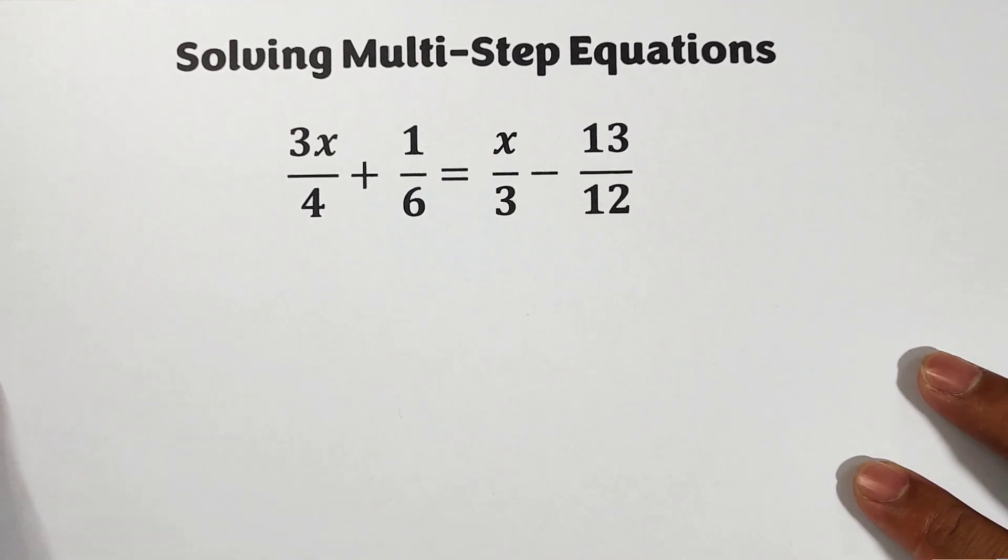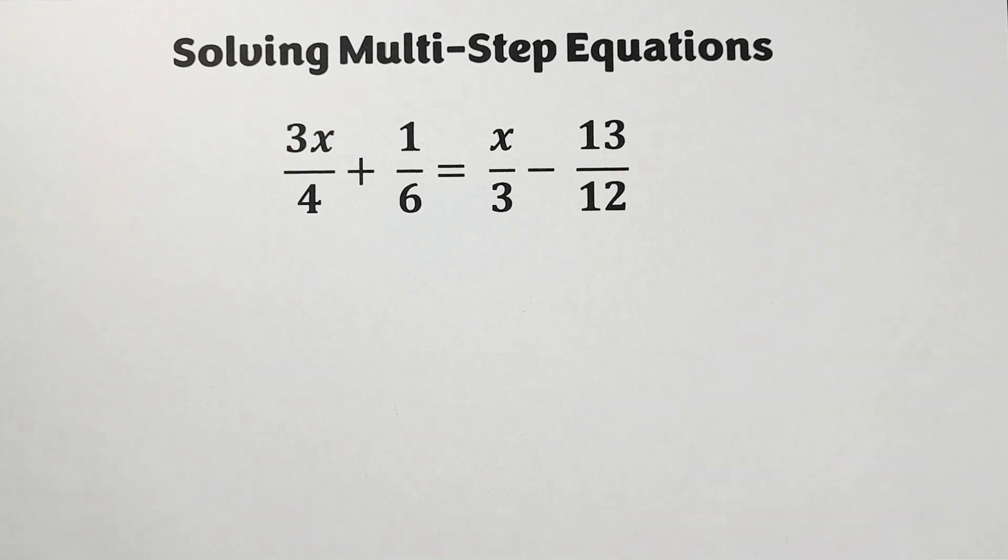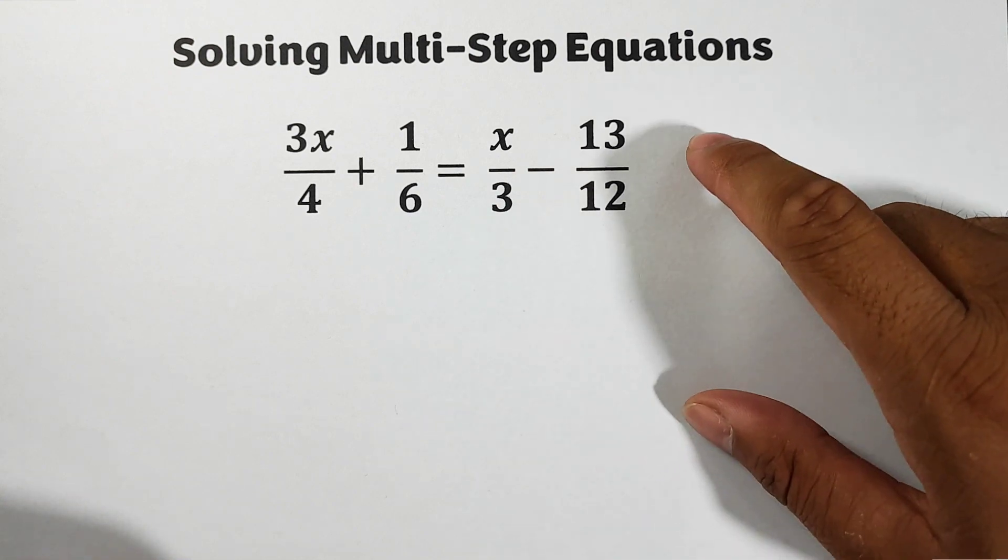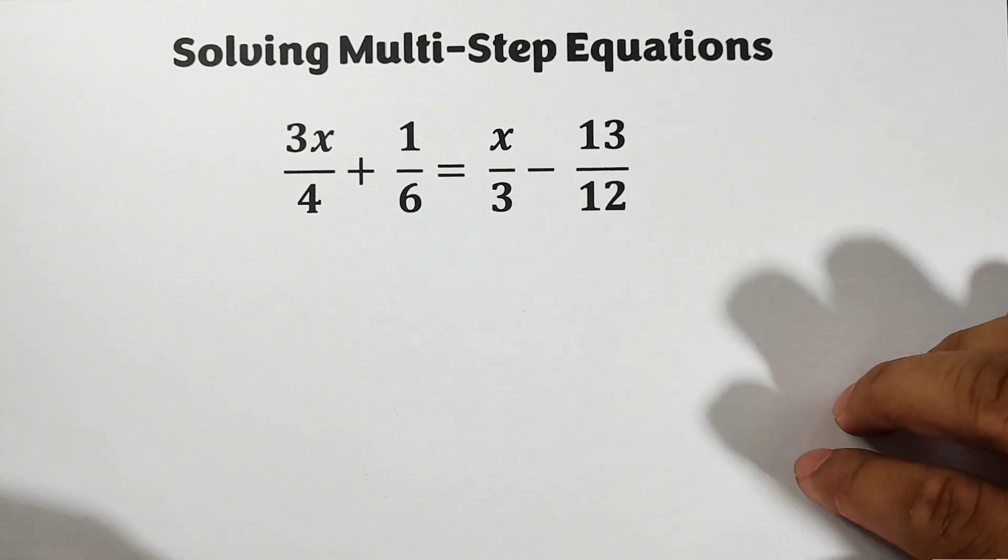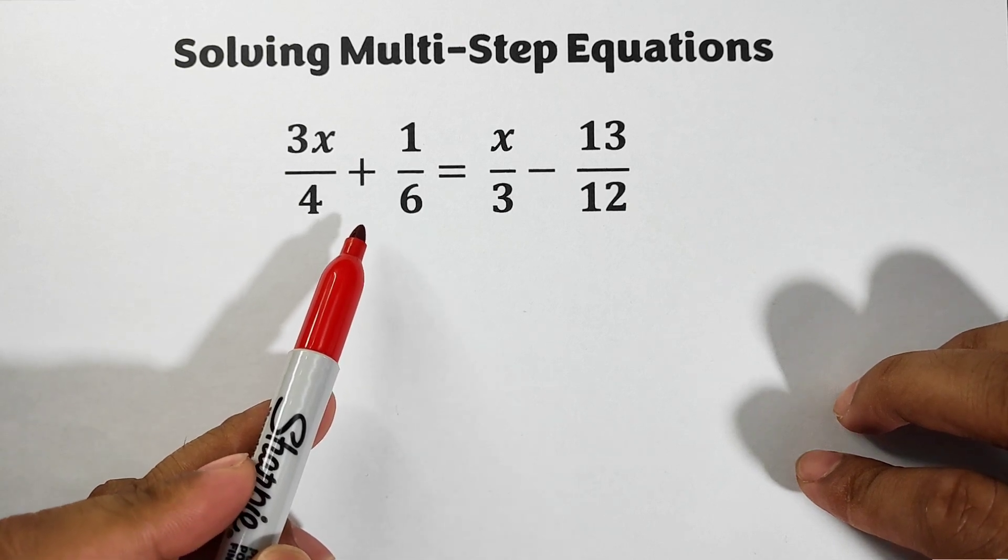In the second equation we have 3x over 4 plus 1 over 6 is equal to x over 3 minus 13 over 12. Now let us see how are we going to multiply this or what is the LCD of this equation.